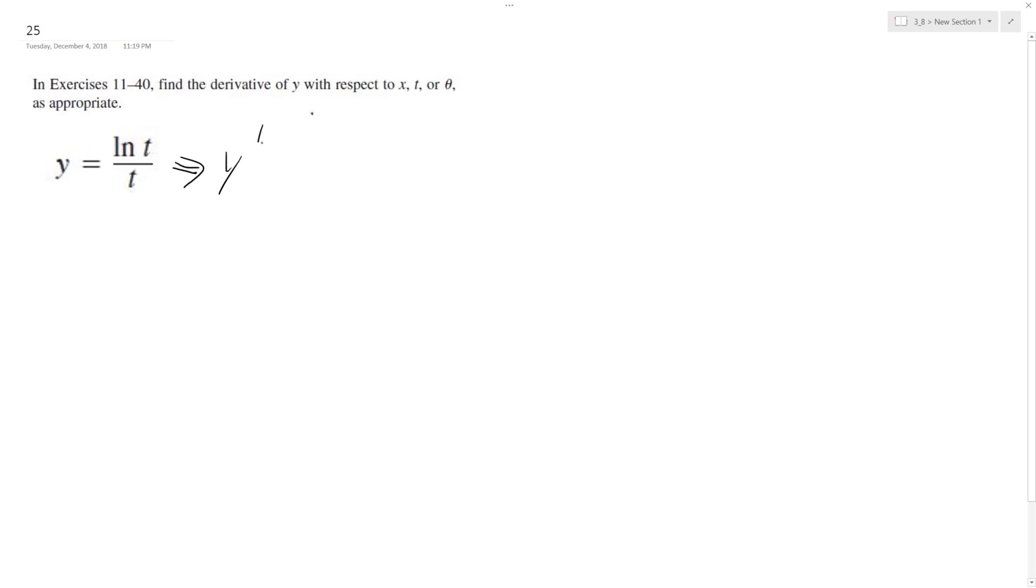So y prime is going to be equal to the derivative of the numerator times the denominator minus the numerator times the derivative of the denominator.